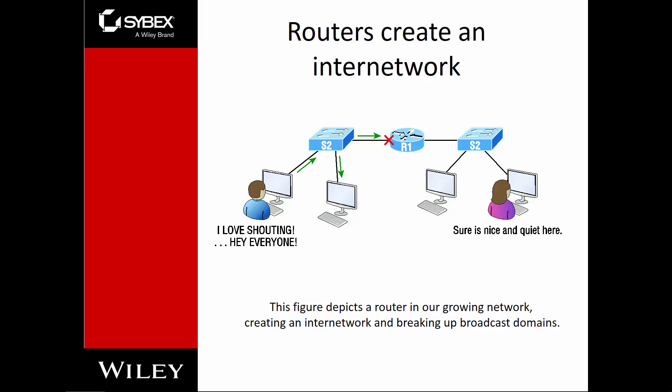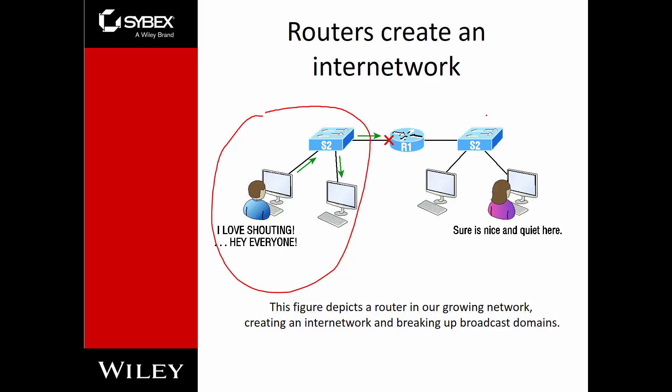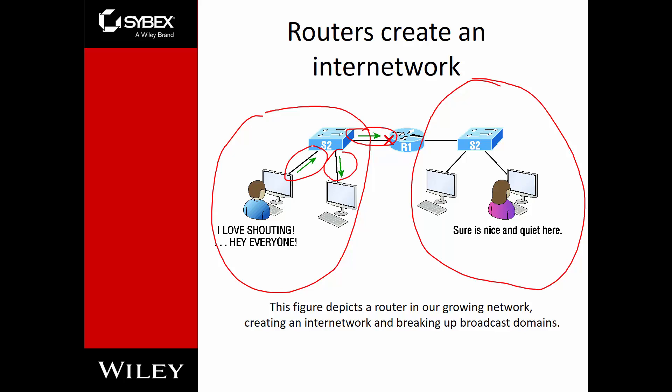If we throw a router in the mix, even if we're sending a broadcast, it won't matter. A broadcast will not cross a layer 3 device. Because our router is a layer 3 device, it will not forward our broadcasts. Even though John may broadcast to everyone in its internal network, it will not cross to the other broadcast domain. So essentially, we have two broadcast domains and six collision domains.